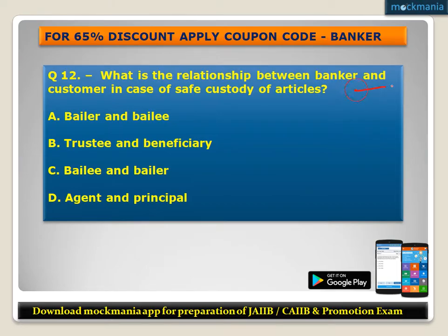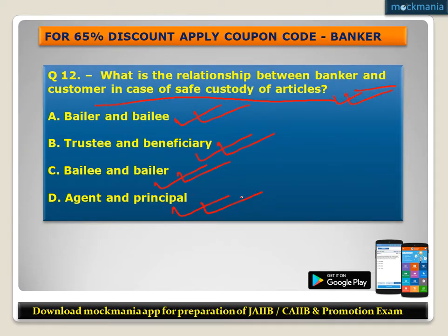Question number twelve: What is the relationship between banker and customer in case of safe custody of articles? Options: A) bailor and bailee, B) trustee and beneficiary, C) bailee and bailor, D) agent and principal. The correct answer is bailee and bailor.